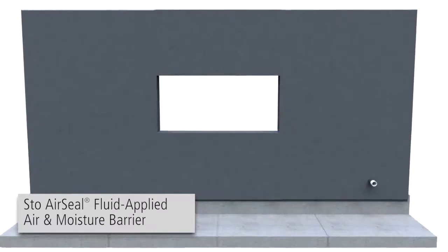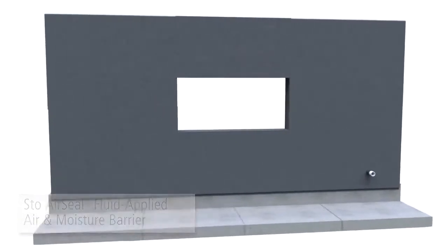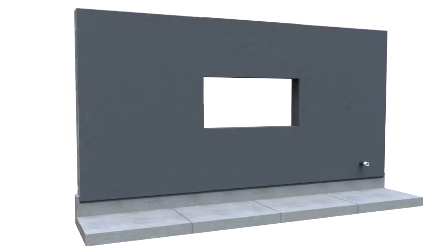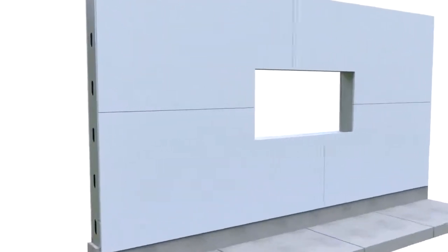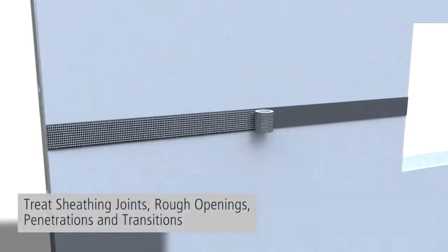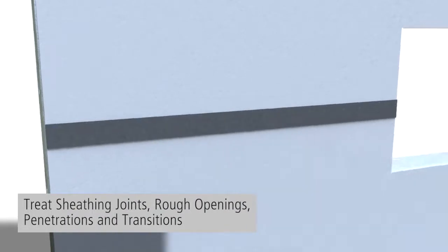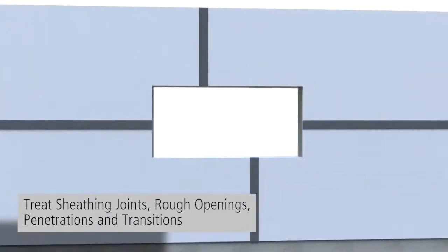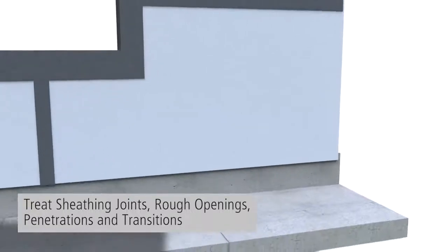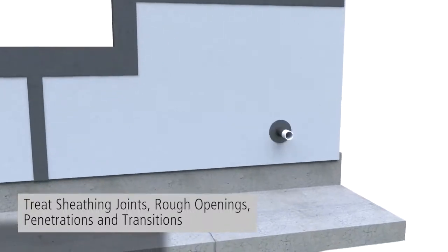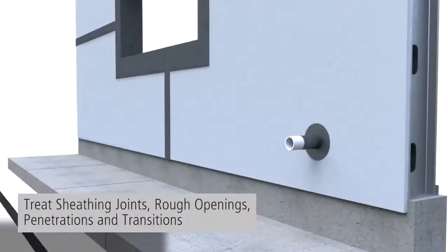The StoweGuard assembly is applied in two steps allowing time to cure in between. First, the air barrier components are applied to the substrate by treating the sheathing joints, rough openings, penetrations, and transitions using the variety of interchangeable StoweGuard joint treatments.